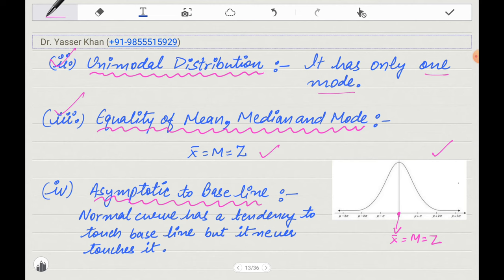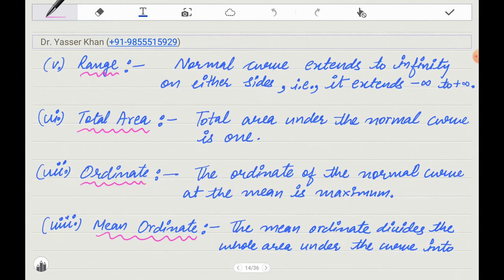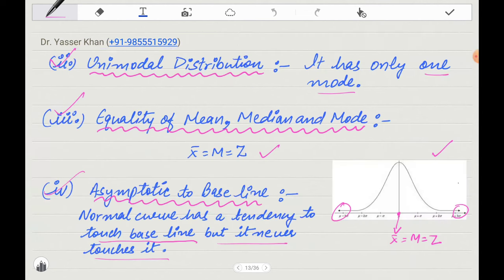After that, it is asymptotic to baseline. It means that it will not touch here or on the other axis. The normal curve has a tendency to touch, but it will never touch on both sides. Next, the range is minus infinity to plus infinity. It means that it can go to minus infinity here and plus infinity to this number.